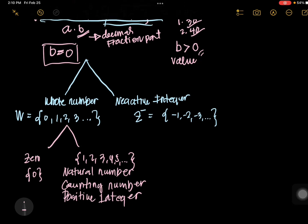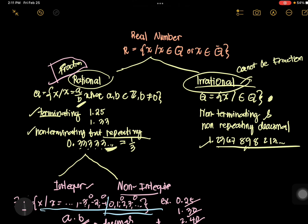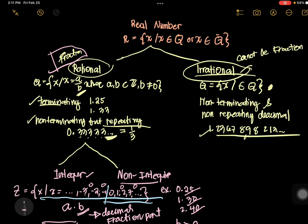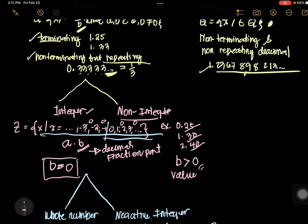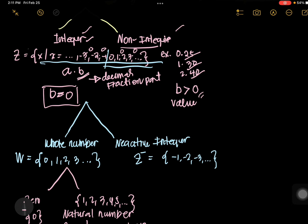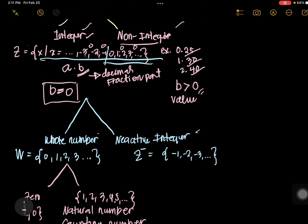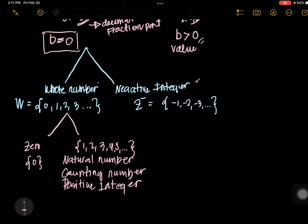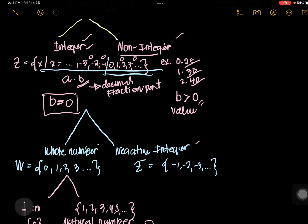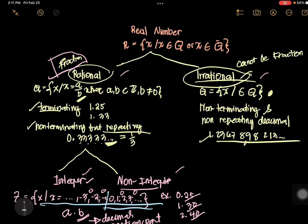That is the brief review of our real number system. A real number system is subdivided into 2: rational and irrational. Rational is subdivided into integer and non-integer. Integer is subdivided into whole number and negative integer. Whole number is subdivided into 0 and the natural numbers — also called counting numbers or positive integers. This is very important, especially when we discuss sets, operations of sets, and subsets.